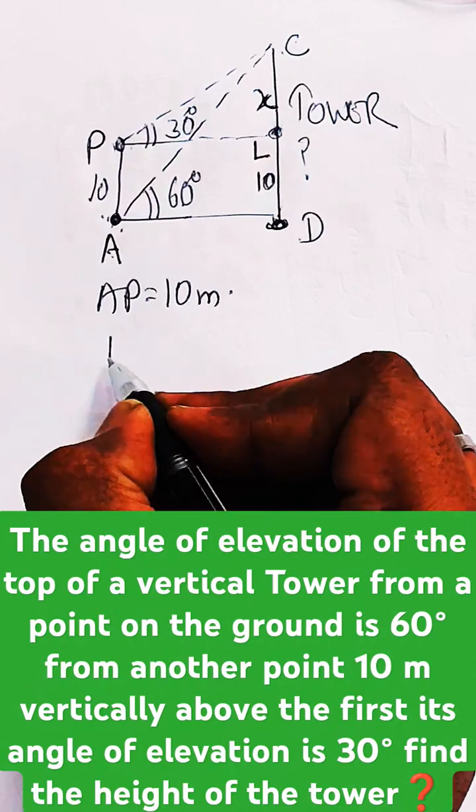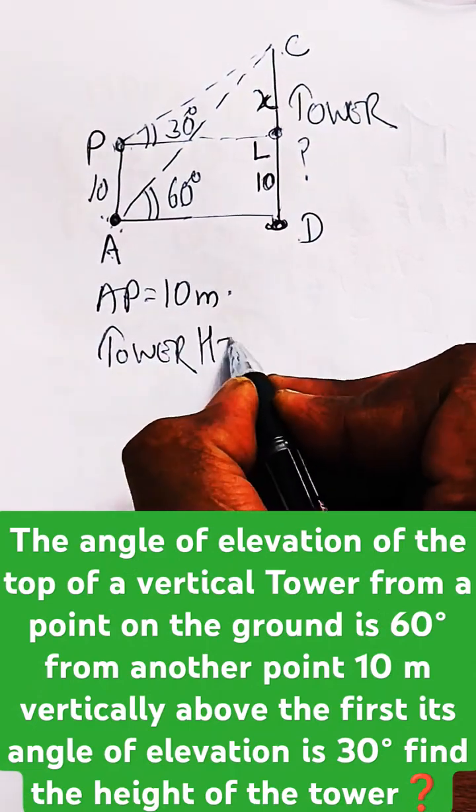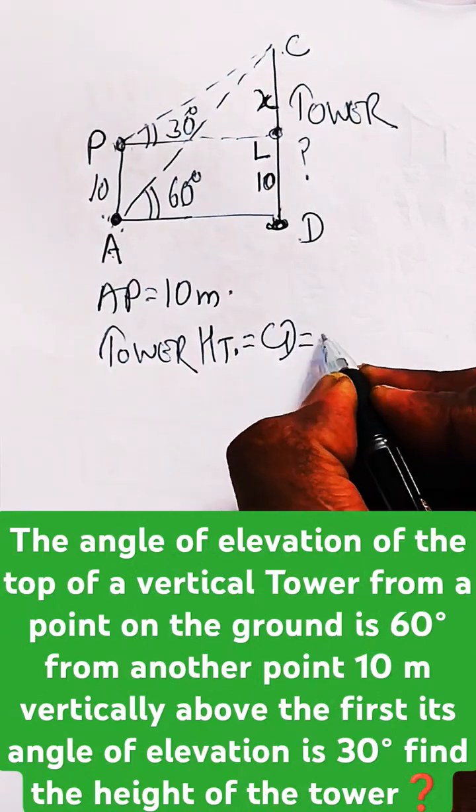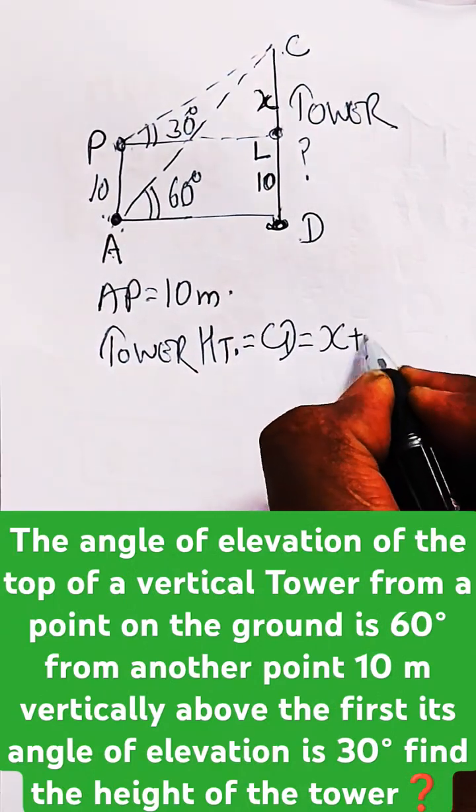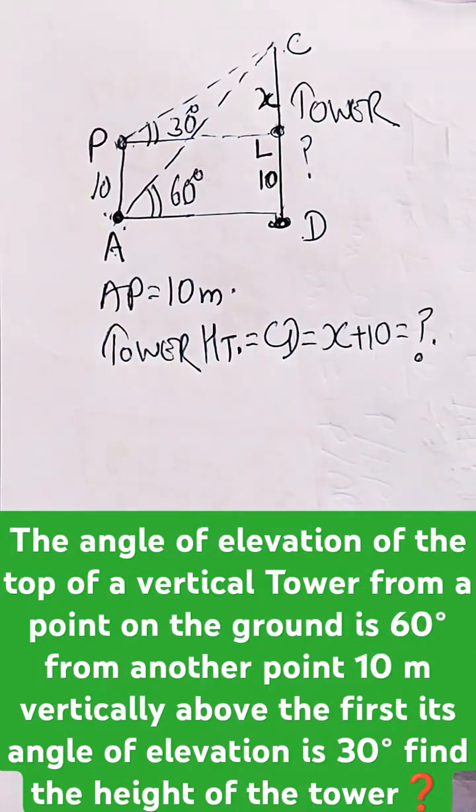Tower height—that is equal to CD—is equal to X plus 10, which is what we need to calculate.